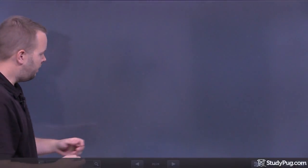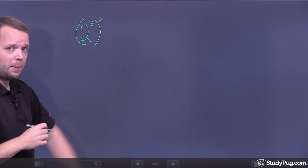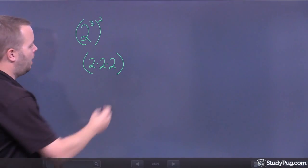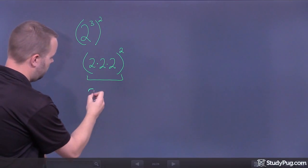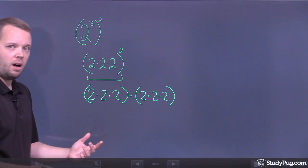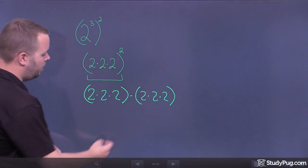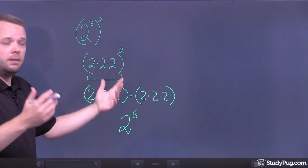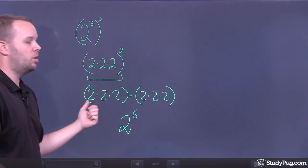Now the power of a power rule is a little different. Let's say I have 2 to the 3rd to the power of 2. Inside the bracket I can rewrite that as 2 times 2 times 2. I'm raising that to the power of 2, which means I'm multiplying it by itself — so it's 2 times 2 times 2, multiplied by 2 times 2 times 2. It's exactly the same as the product rule. I now have six 2s being multiplied together, so this is 2 to the 6th. When you have a power of a power, you just multiply the two exponents. If it were x to the 3rd to the 2nd power, it's x to the 6th.